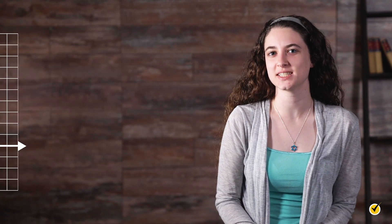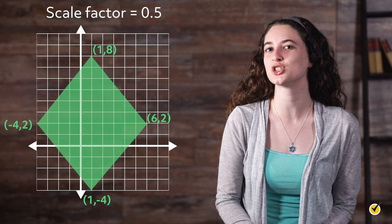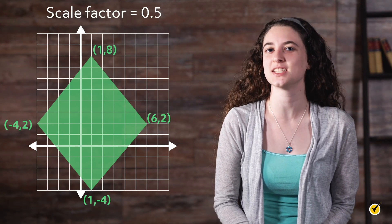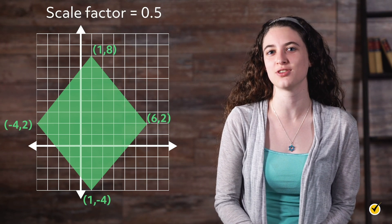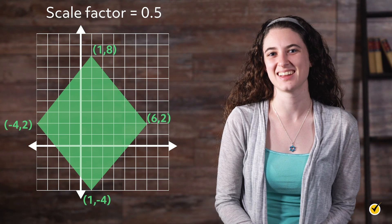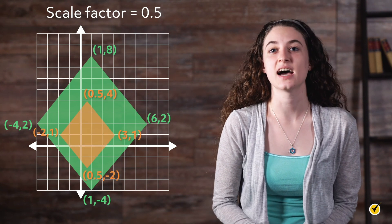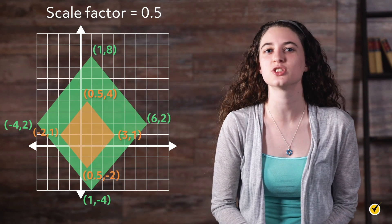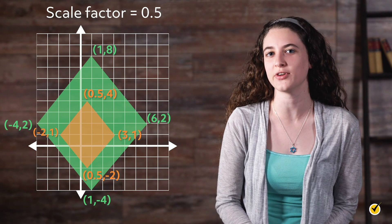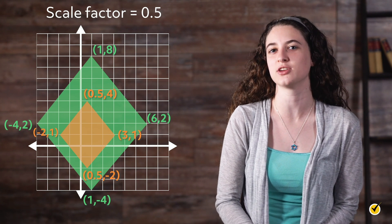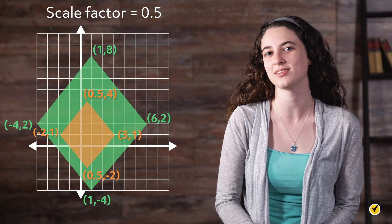Ready to try one? Pause this video and scale this quadrilateral by a factor of 0.5, which should make it smaller. Once you're done, play the video to see if your quadrilateral looks right. Here's what you should have come up with — we just cut each of our x values and y values in half by multiplying our values by our scale factor, 0.5.